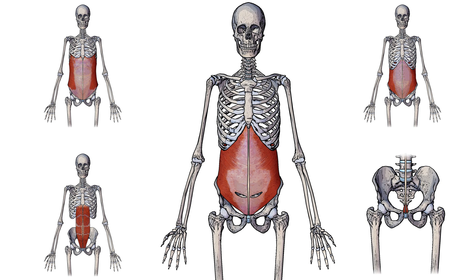These two muscles sit inside the rectus sheath, much like a sword is held in a sheath when it's not in use. So the rectus sheath wraps around the rectus abdominus and the pyramidalis, holding them both in place.